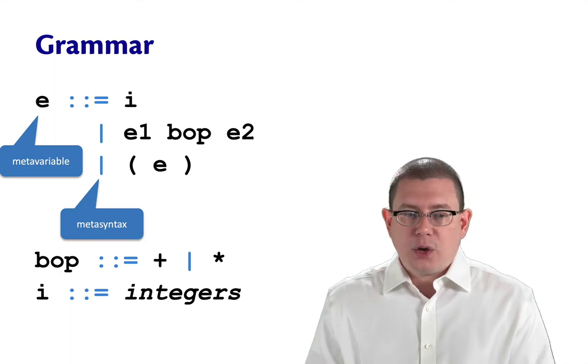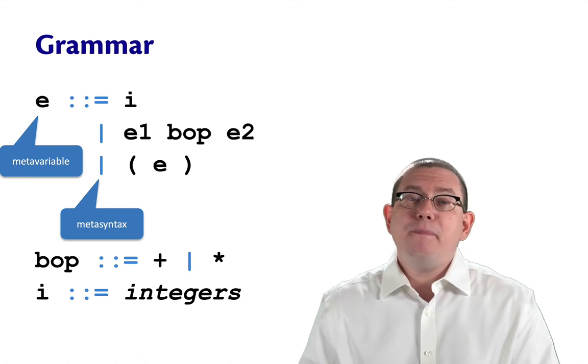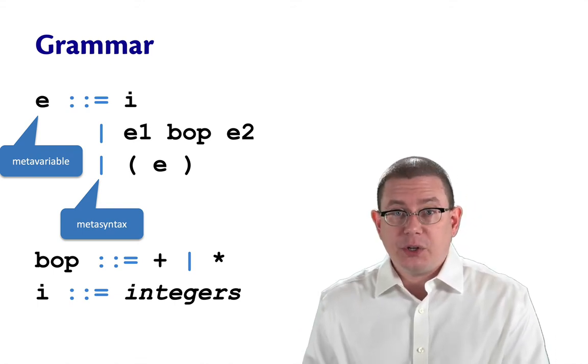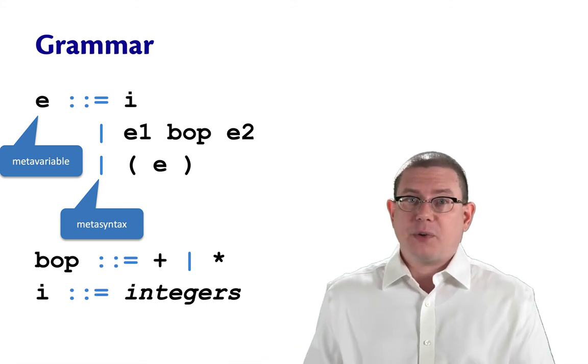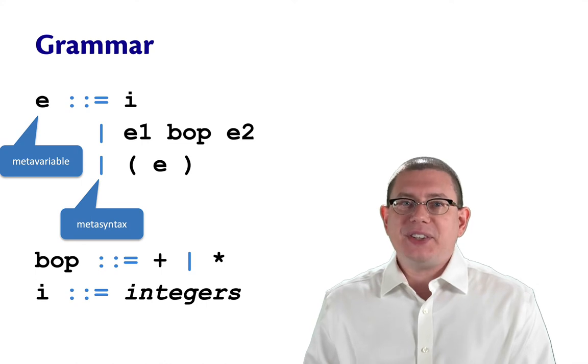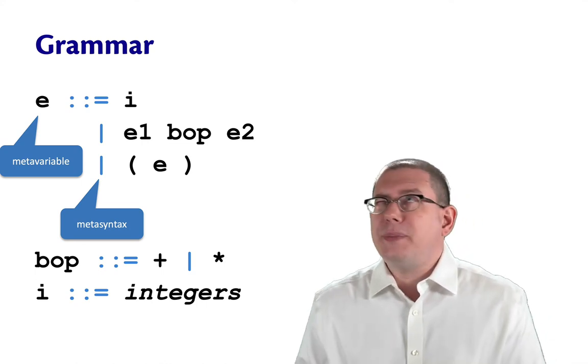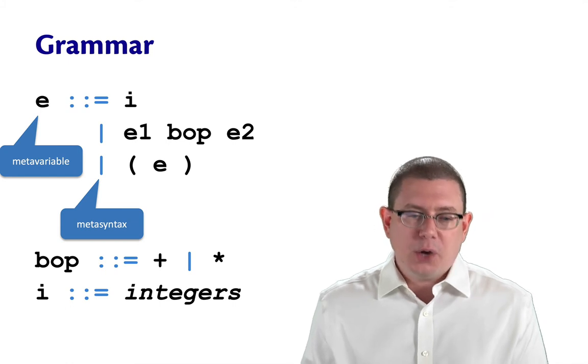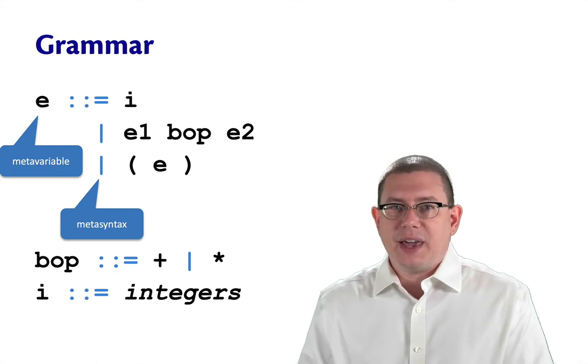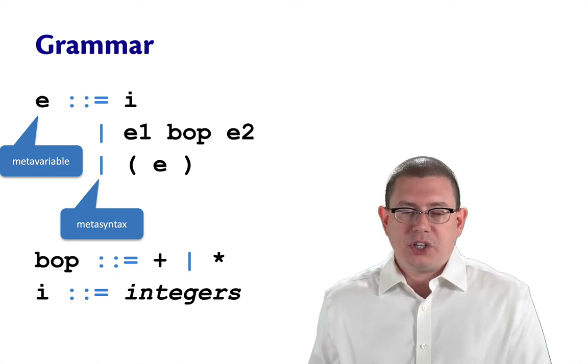The colon colon equals and the vertical bar that I've drawn in a different color here are pieces of meta-syntax. They are not part of the syntax of the source language itself. They don't go in calculator expressions. They're what I'm using to help describe the syntax of the language. If you were ever trying to describe the syntax of a language that did have colon colon equals or a vertical bar in it, then you'd have to be a little more careful to distinguish between which occurrences of that is syntax versus meta-syntax. But we don't have that problem with the calculator language here.